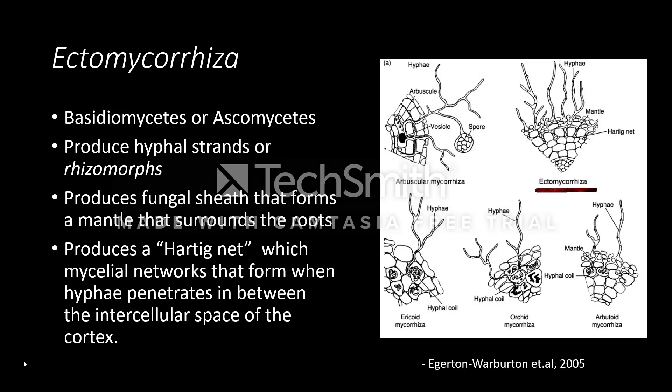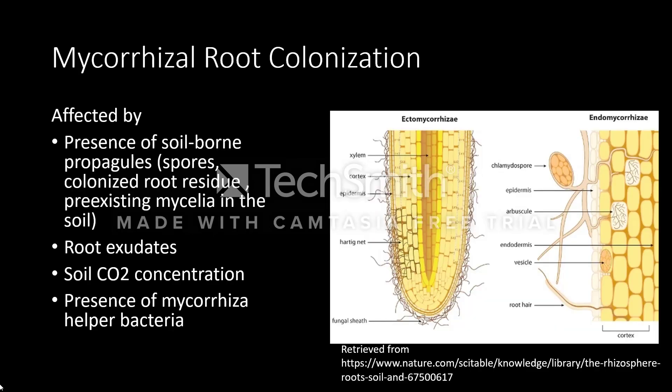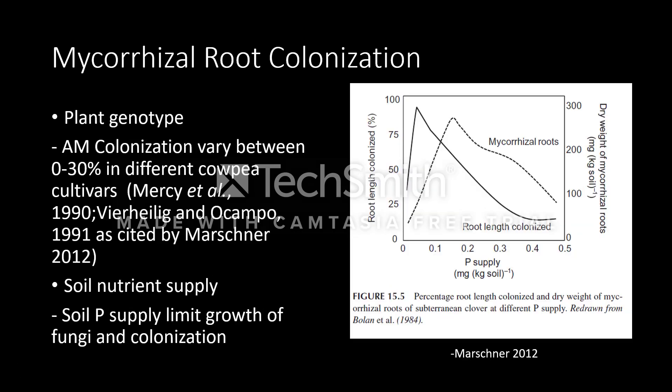Root colonization by mycorrhiza is affected by the presence of spores, colonized root residue, and pre-existing mycelia. They are also affected by root exudates, the soil's CO2 concentration, and the presence of helper bacteria. Genotype also affects mycorrhizal root colonization.